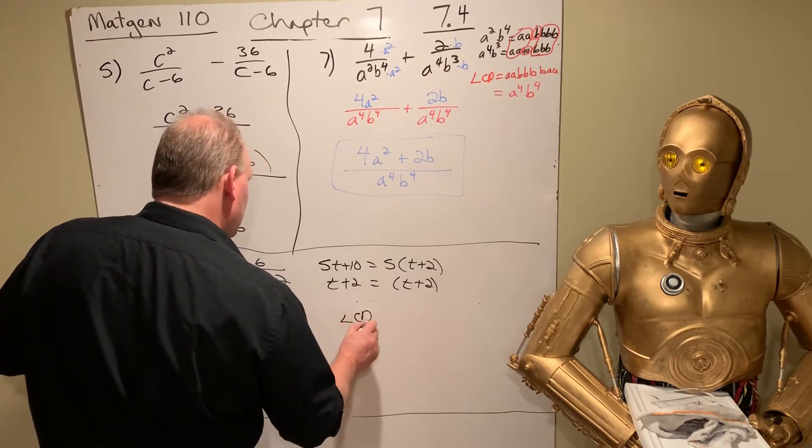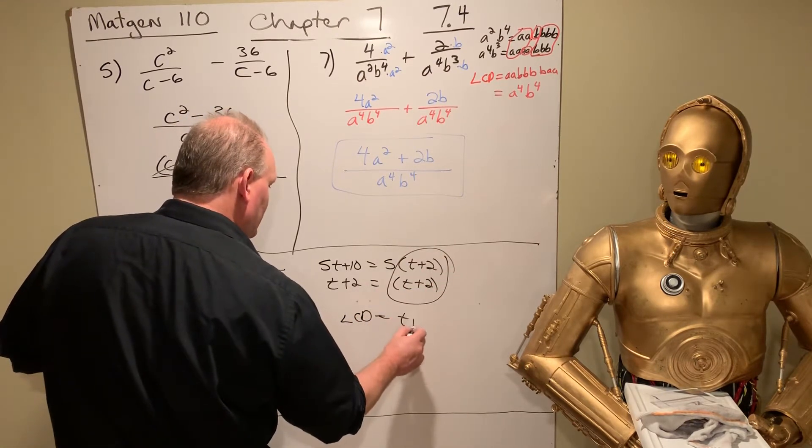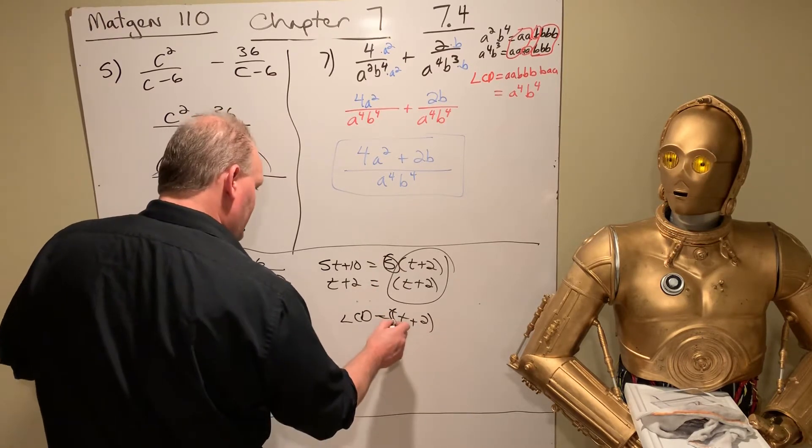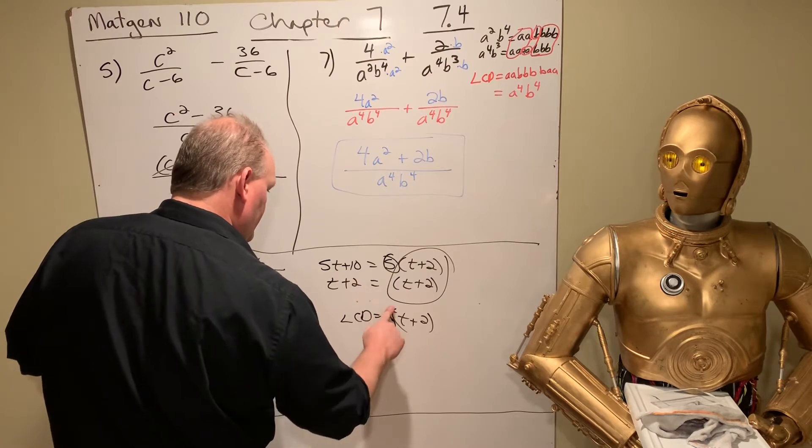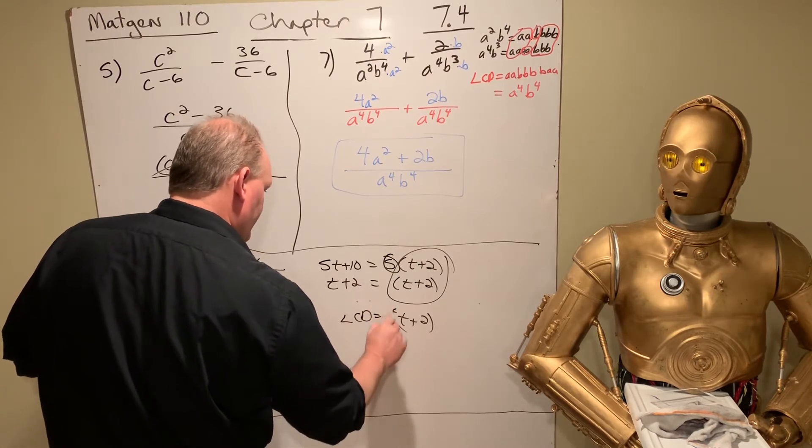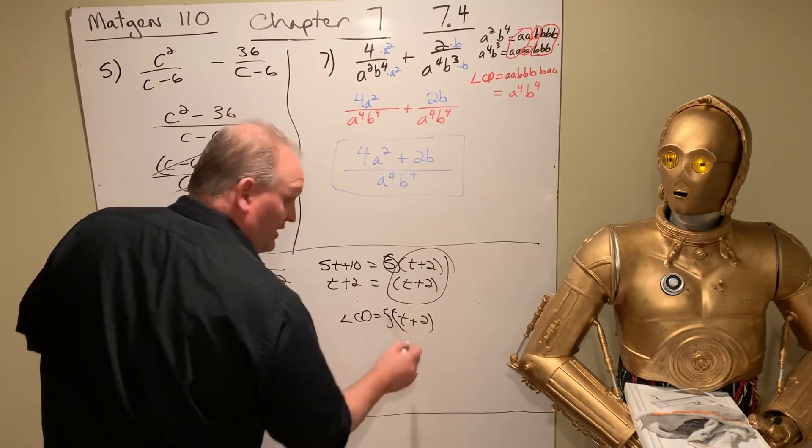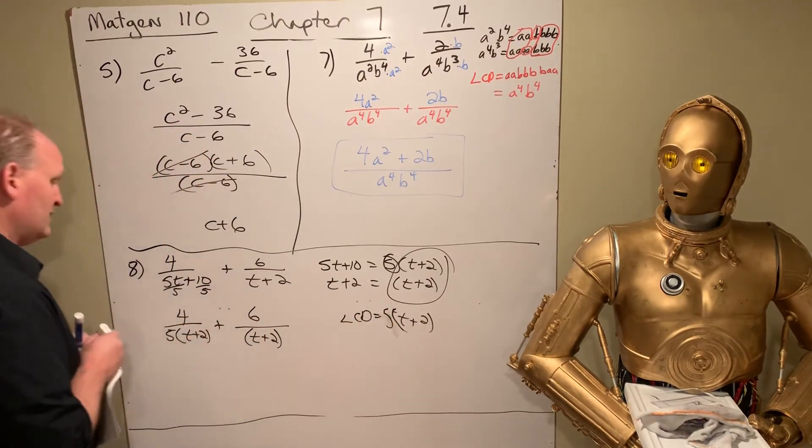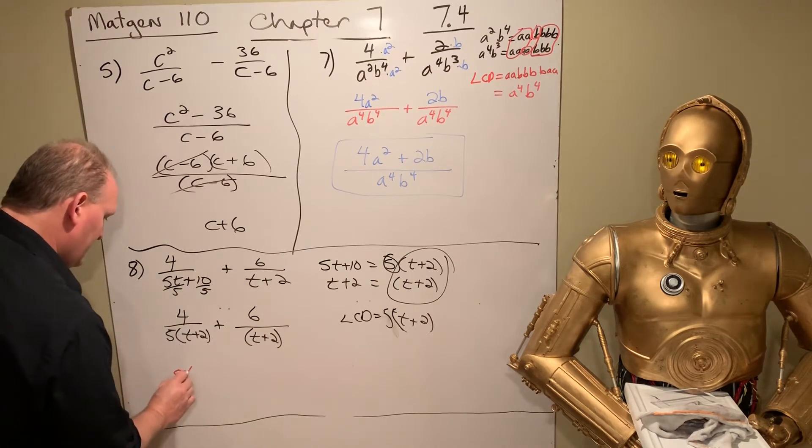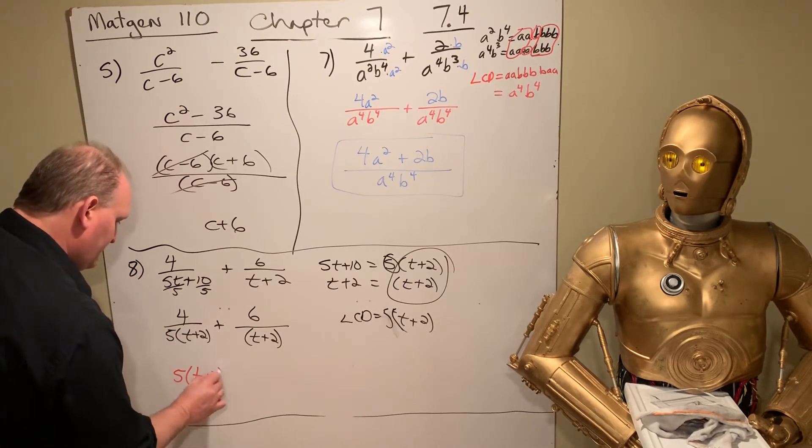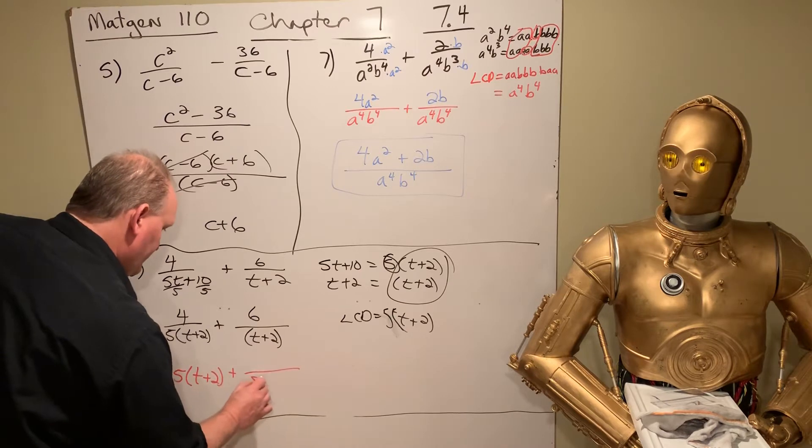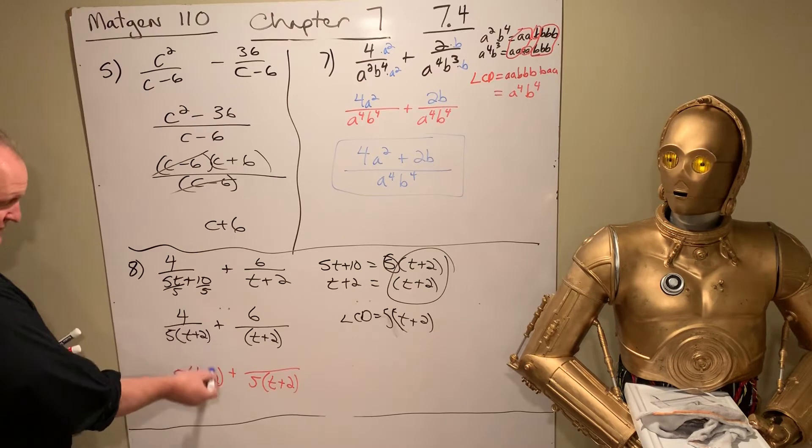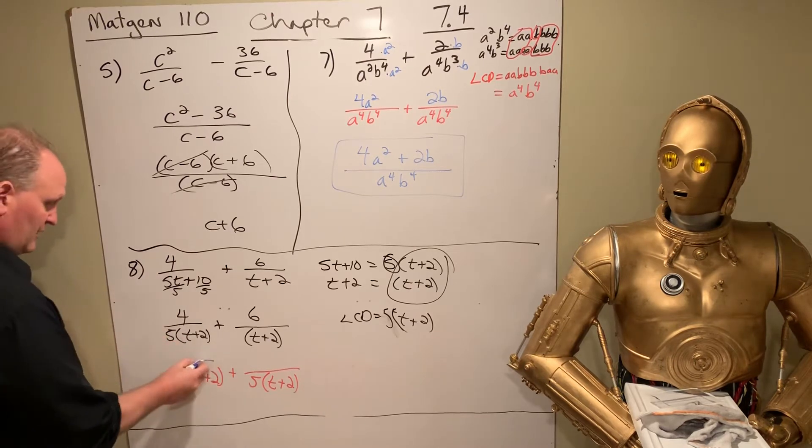So the LCD, you take what they have in common. That's T plus 2. And then you take the leftover. That's 5. So that's our common denominator. So we're going to multiply. This one already is 5 times T plus 2. So I'm not going to change anything. But it's just 4 on top.